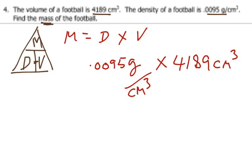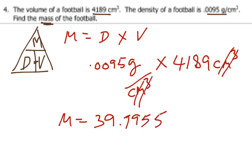Why am I writing the units out? Because I see that my centimeters cubed and my centimeters cubed cancel. If they don't cancel, I know I did something wrong. So therefore, my mass would be equal to 39.7955 on my calculator. And that's grams.